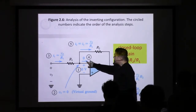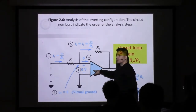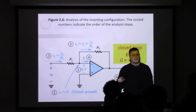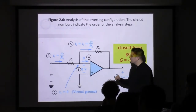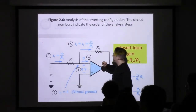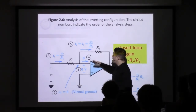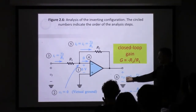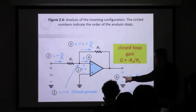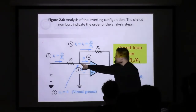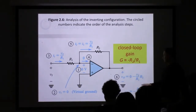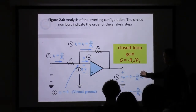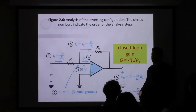We assume that no current flows into the op-amp — this is step four — because of one of the ideal characteristics of an op-amp. We then calculate the current flowing along the feedback path, which KCL tells us is exactly the same.